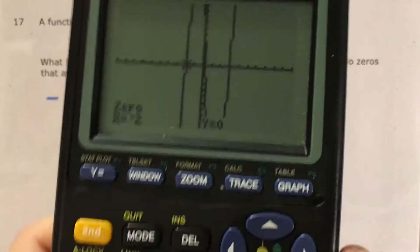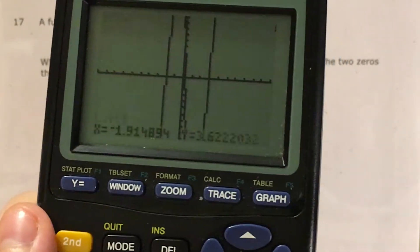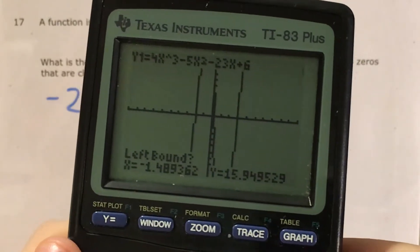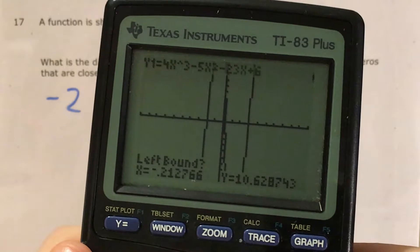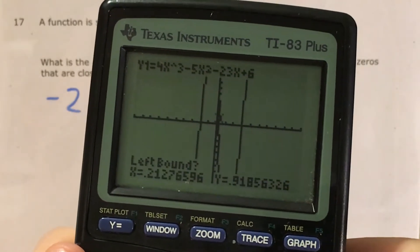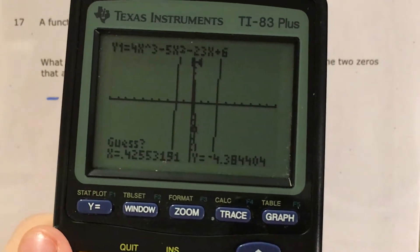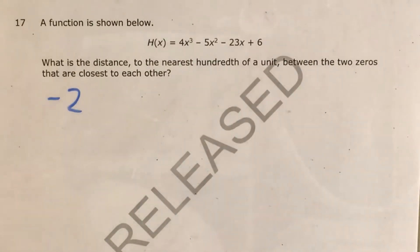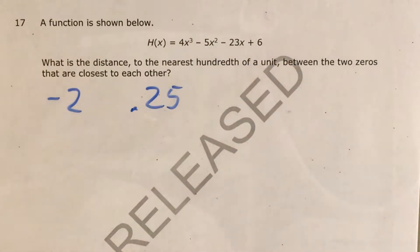Now I find my next zero, same button combination: second trace to zero. In the middle here it's kind of doing this, so my left bound actually needs to be just above the x-axis, my right bound needs to be just below. I guess and it gives me 0.25 or 25 hundredths.